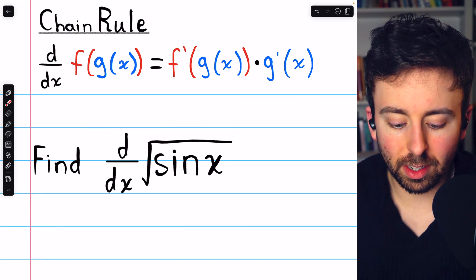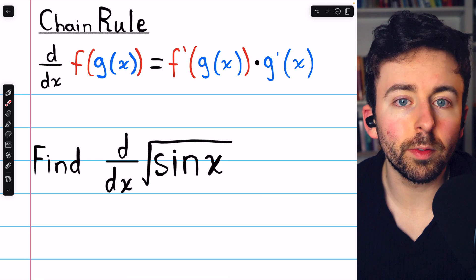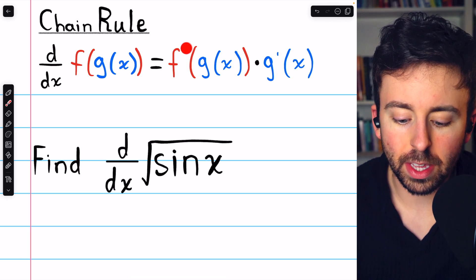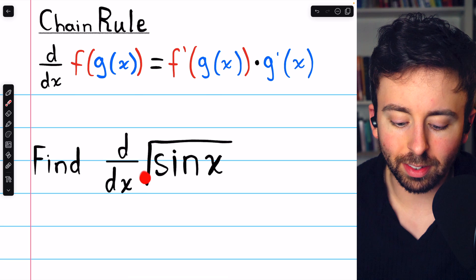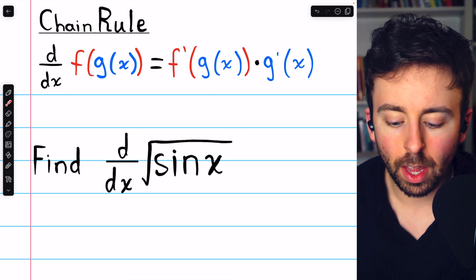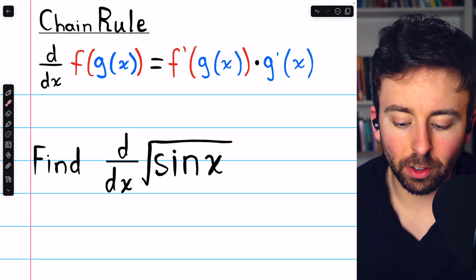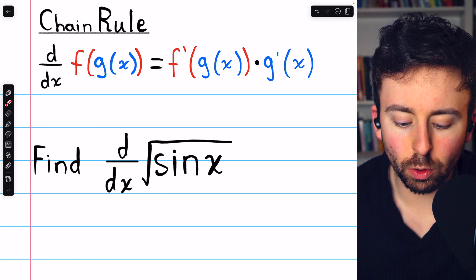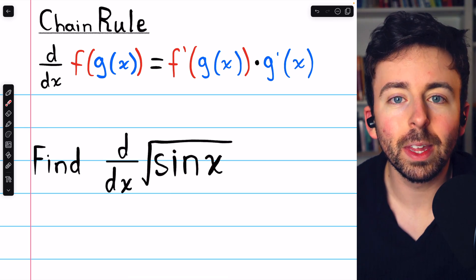The chain rule tells us that to find the derivative of a composite function like this, we'll have to take the derivative of the outside function, which in this case is the square root function, and leave the inside unchanged, and then multiply by the derivative of that inside function. Let's give it a try.